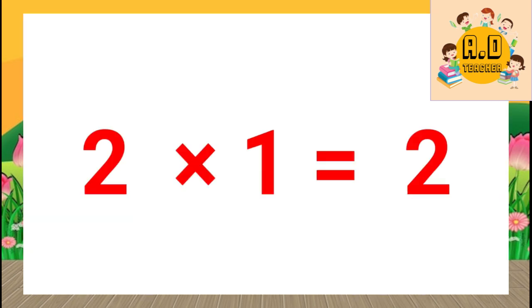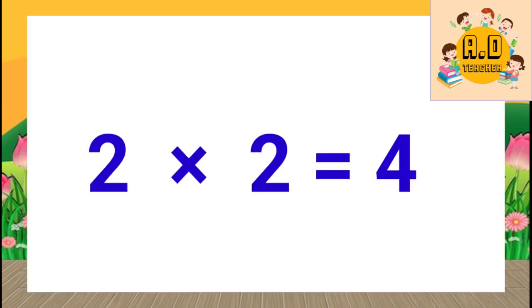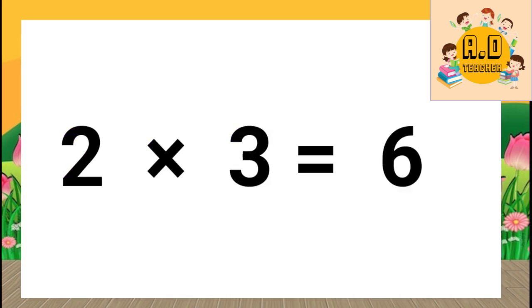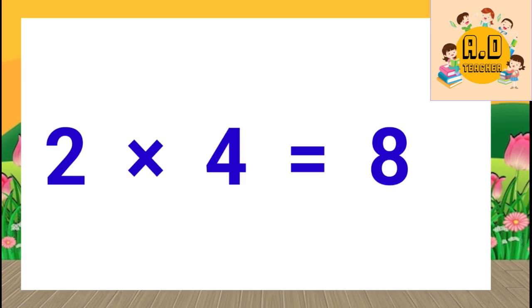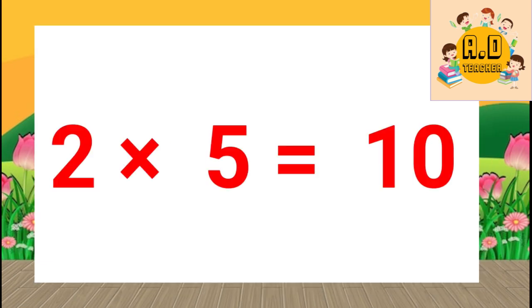2 ones are 2, 2 twos are 4, 2 threes are 6, 2 fours are 8, 2 fives are 10.